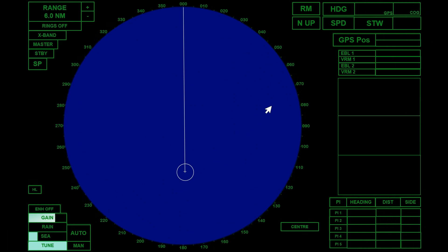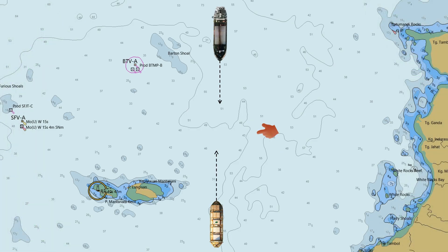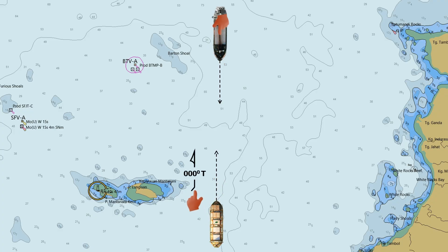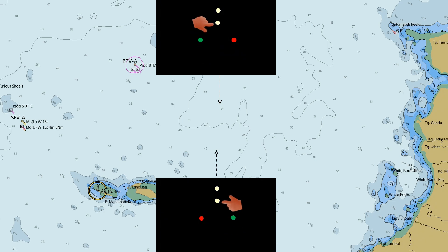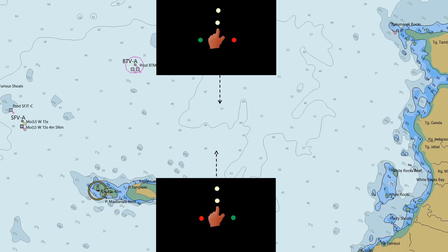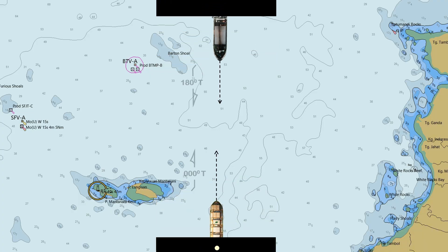Now, why should speed through water be used and set in the radar for collision avoidance? Let's consider a scenario to explain. Imagine two vessels approaching each other at night — this vessel is proceeding due north, while this one is proceeding due south. Based on their aspects, these are the navigational lights visible from each vessel. They can both see each other's side lights — the port and starboard side lights, along with the forward and after masthead light. The forward masthead lights are aligned or nearly aligned with the after masthead light, indicating they are in a head-on situation.